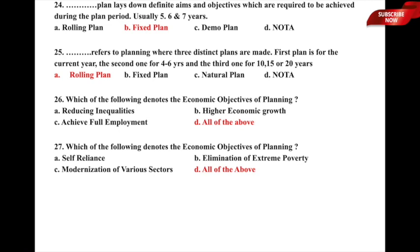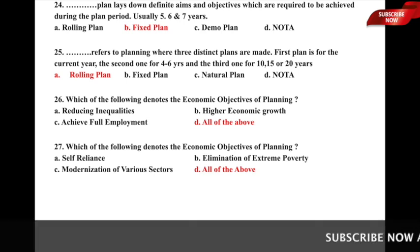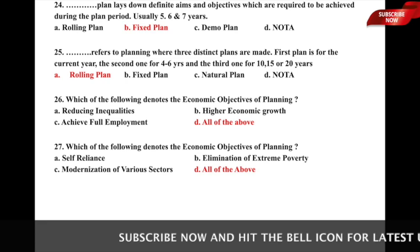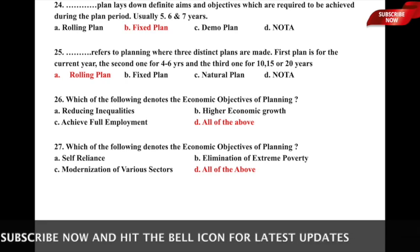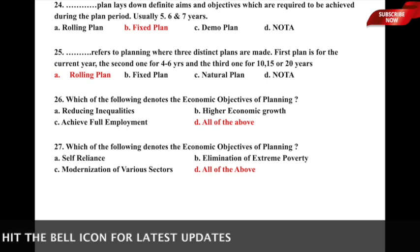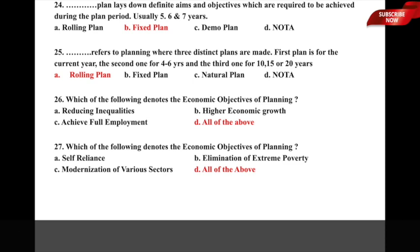Question 25: Dash refers to planning where three distinct plans are made — the first for the current year, the second for a short term of 4 to 6 years, and the third for 10, 15, or 20 years — whether it is a) rolling plan, b) fixed plan, c) natural plan, or d) none of the above. The correct answer is option a) rolling plan.